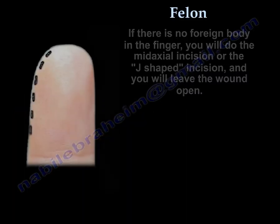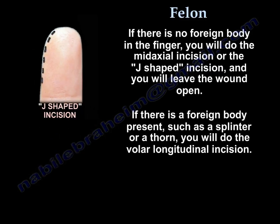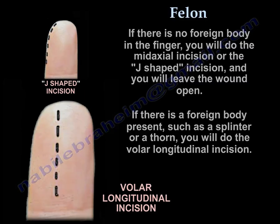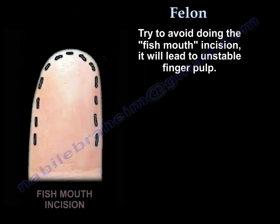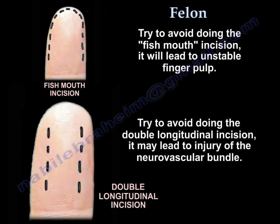If there is no foreign body in the finger, you will do the mid-axial incision or the J incision, and you are going to leave the wound open. If there is a foreign body like a splinter or thorn, you will do the volar longitudinal incision. Try to avoid the fish mouth incision, as it will lead to an unstable finger pulp. Also avoid the double longitudinal incision, because it may lead to injury of the neurovascular bundle.